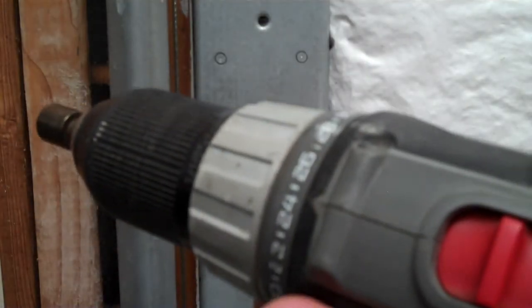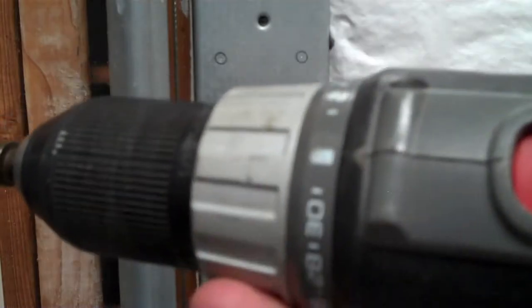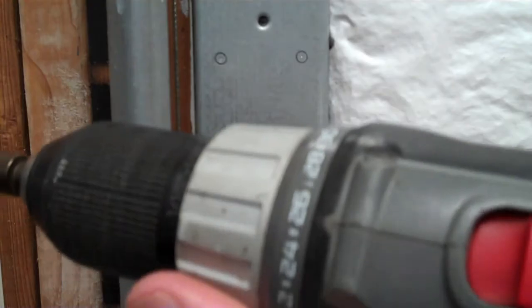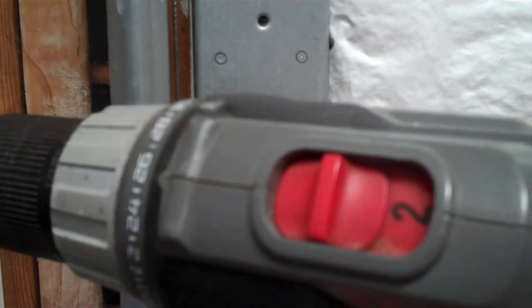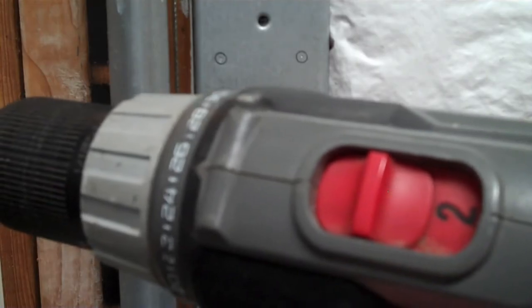If you have a clutch on your drill, you don't want to be at the drill setting. You want to be just a little bit back from that. And then you want to be in high speed when you're doing the drill on the drill.